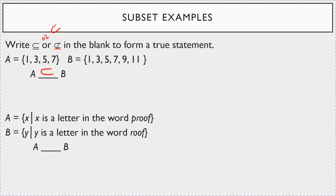Here's an interesting one. Set A is the set of all elements X such that X is a letter of the word PROOF — P-R-O-O-F. So A is actually the set {P, R, O, F} — you don't write O twice. And B is the set of all elements Y such that Y is a letter of ROOF, so B is {R, O, F}. A has more elements than B, so A is not a subset of B. But interestingly, if you flip it, B is a proper subset of A, since all elements of B are in A.